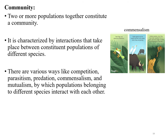Populations of several species living and interacting in the same area form a community. It is characterized by interactions between the constituent populations of different species, such as competition, parasitism, and predation. Predation is the biological interaction where one organism — the predator — kills and eats another organism. Commensalism is a long-term biological interaction in which a member of one species gains benefit while the other species is neither benefited nor harmed. In mutualism, both organisms benefit from each other; it is also described as an ecological interaction between two or more species where each has a net benefit — for example, mycorrhizae, the association between plants and fungi.